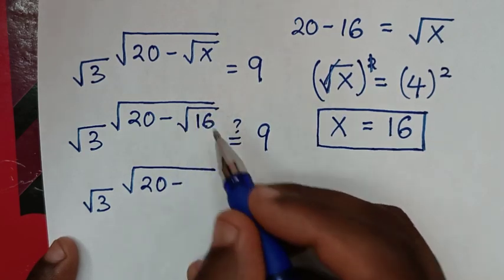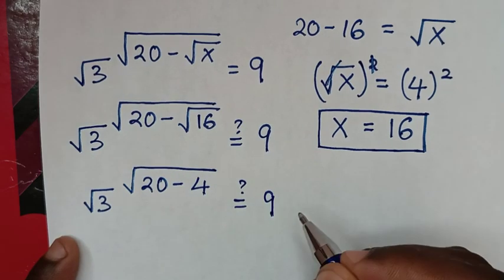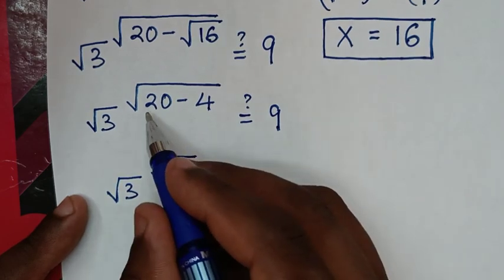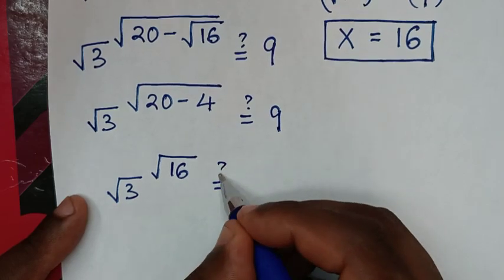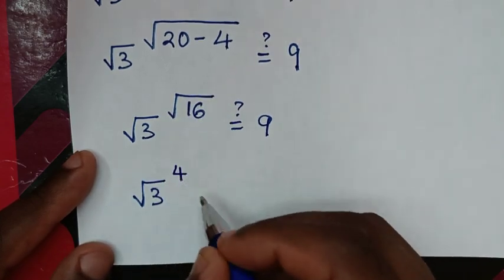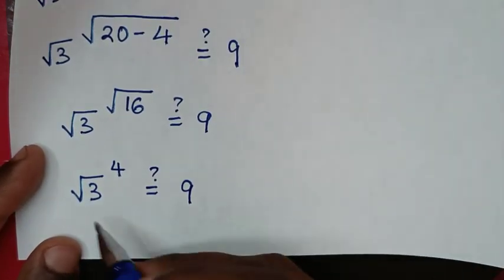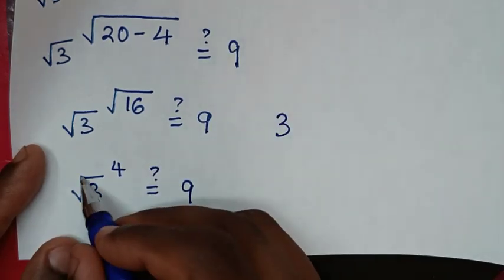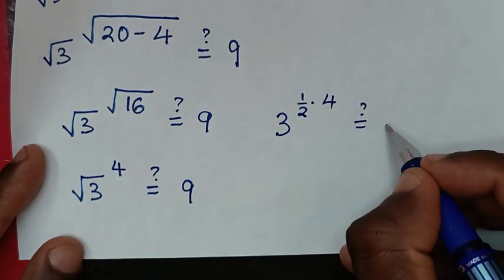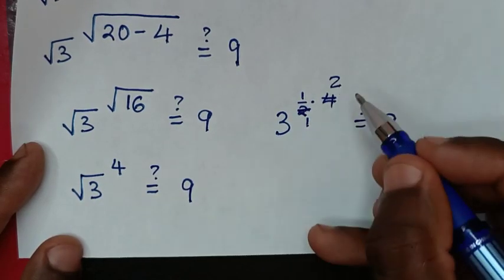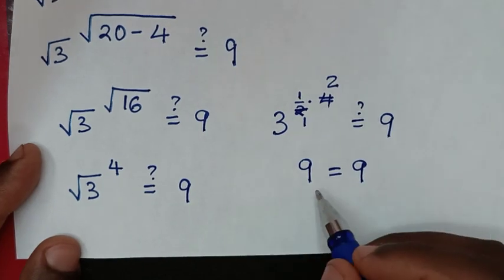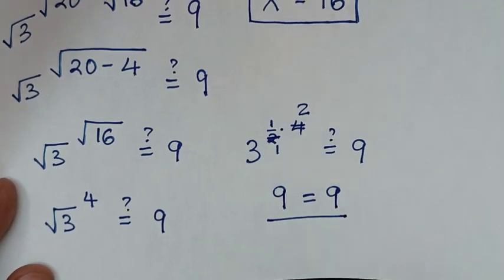Simplifying: √16 is 4, so we get √3 to the power of (√20 minus 4), which is √(16), equals 9. √16 is 4, so it's √3 to the power of 4. Writing √3 as 3^(1/2) and multiplying exponents: 3 to the power of (1/2 times 4) equals 3 squared, which equals 9. The left side equals the right side — confirmed true. Therefore x equals 16 is correct.